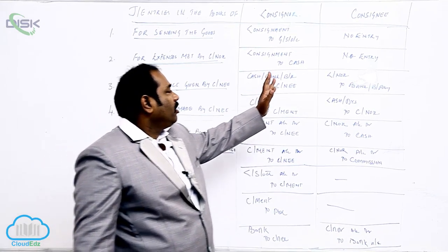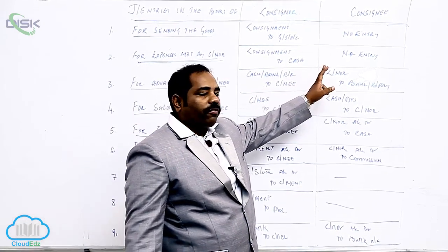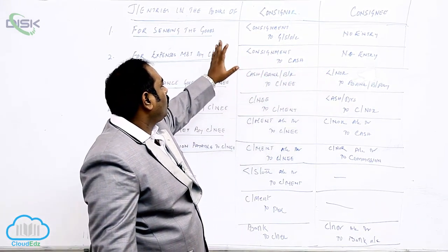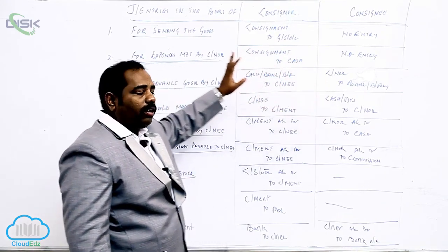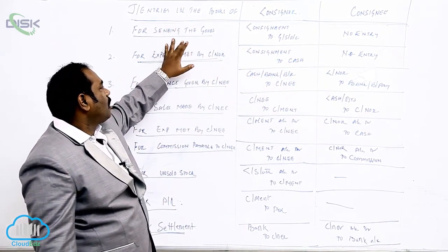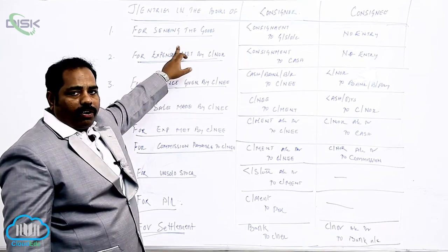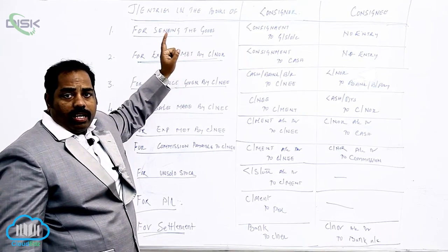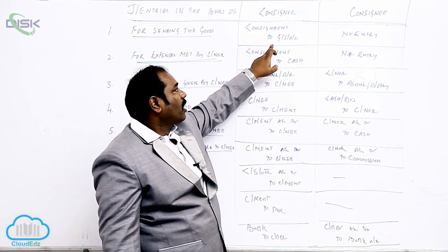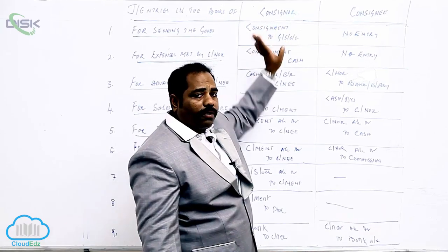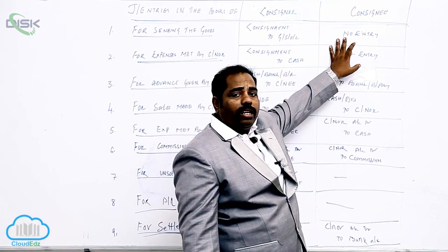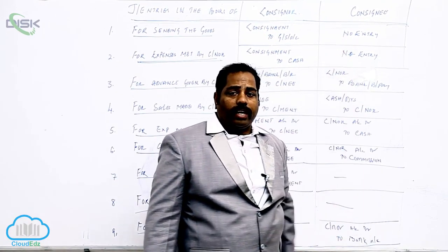Before teaching you the journal entries in the books of consignee, let me teach you both in consignee as well as about consignee. Whenever we send the goods on consignment, the first entry will be for sending the goods. The entry is: consignment to goods sent on consignment, in the books of consigner. Whereas in the books of consignee, there is no entry.